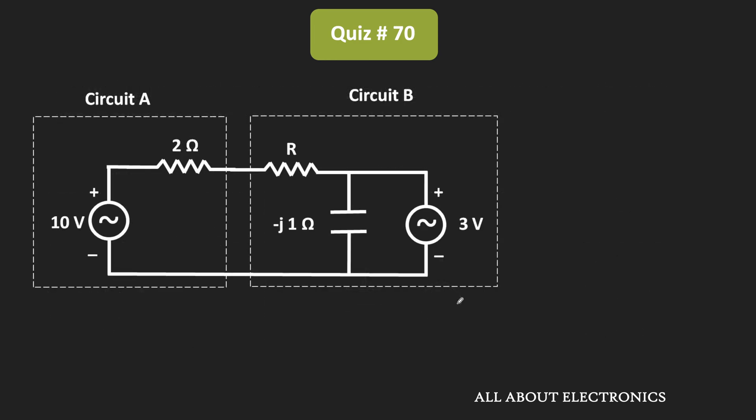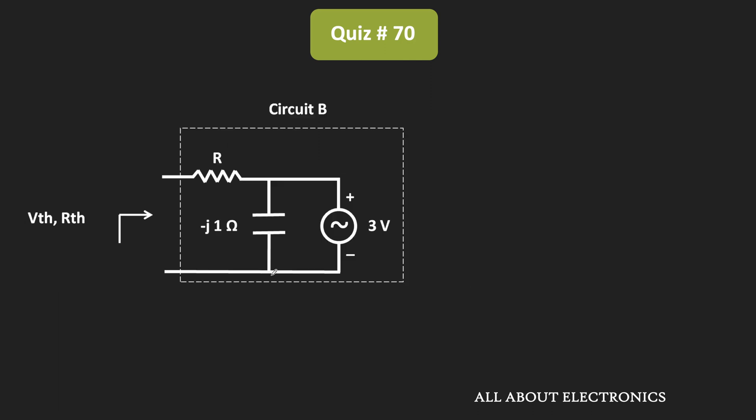To find the value of R for maximum power transfer, first of all let us find the Thevenin's equivalent of circuit B. That means let us find the Thevenin's equivalent voltage and the Thevenin's equivalent resistance which is seen from this side.